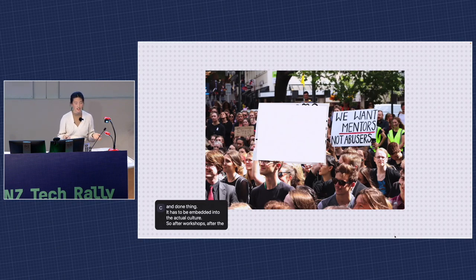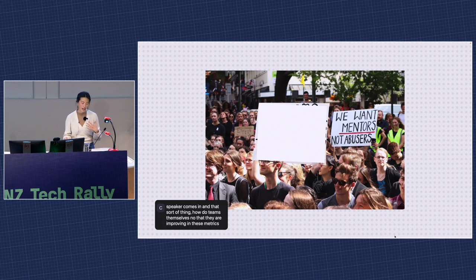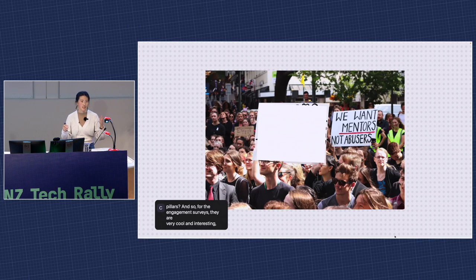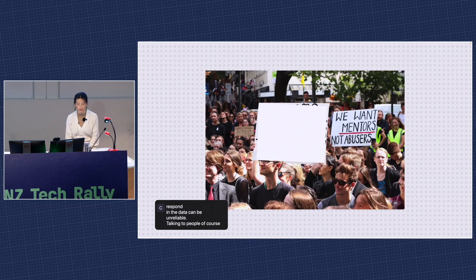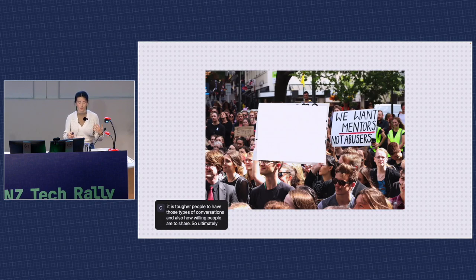So after workshops, after a one-off speaker comes in — how do teams know they're actually improving? Employee engagement surveys are really cool and rich with qualitative information, but accuracy depends on how many people choose to respond, and the data could be unreliable. Talking to people is the best, but it's not very scalable and depends on how willing people are to share. Ultimately, we wanted to give people easy and regular feedback loops on how things are going, so individuals and teams can track progress and have more informed retros and one-on-ones.